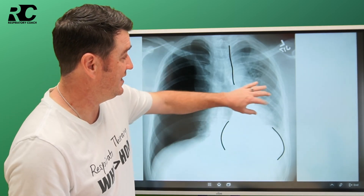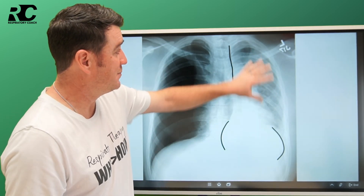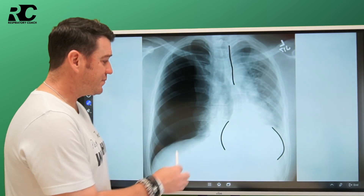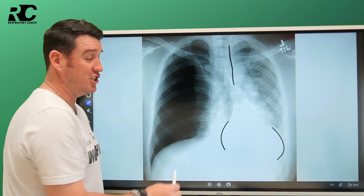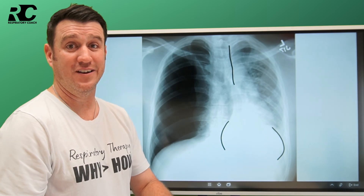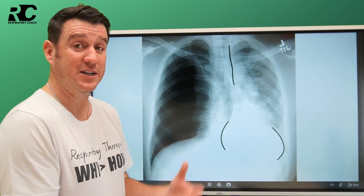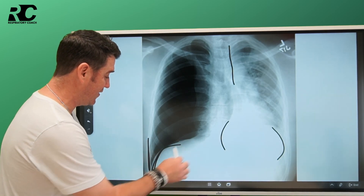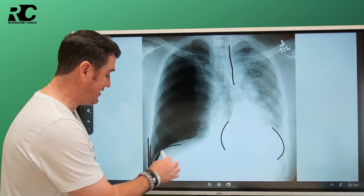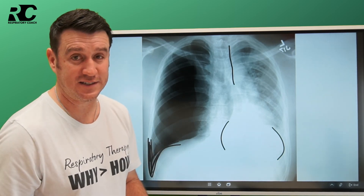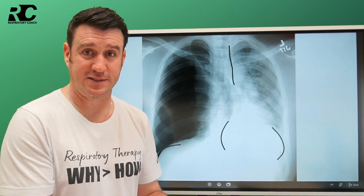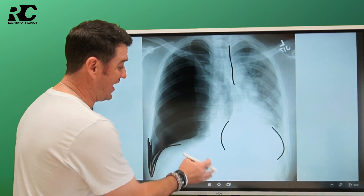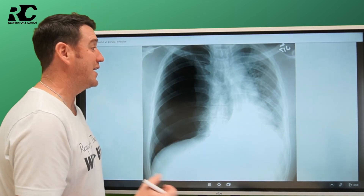I can see lung markings on the opaque side — they feather out to the thoracic edge. But on the hyperlucent side, I don't see any lung markings. It just looks very dark, very black, very hollow. I also see the costophrenic angle come way down here, and this is a telltale sign of this disease process, known as the deep sulcus. We'll come back to confirm what you thought it was.